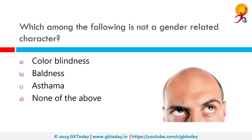Which among the following is not a gender-related character, or something that is influenced by your gender? The correct answer is asthma. Color blindness and baldness are both gender-related. Asthma, on the other hand, is not. It is a common long-term inflammatory disease of the airways of the lungs.